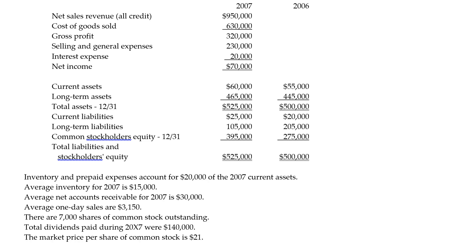Days sales in receivable, sometimes also called days sales outstanding or DSO. This is a very important ratio and frankly one that tends to give people some trouble because there's a two-step calculation to it.